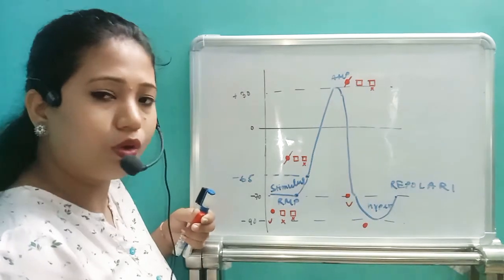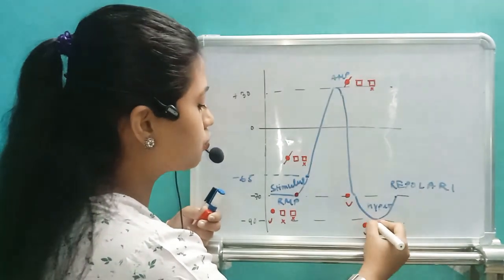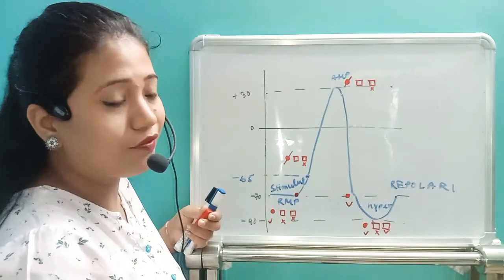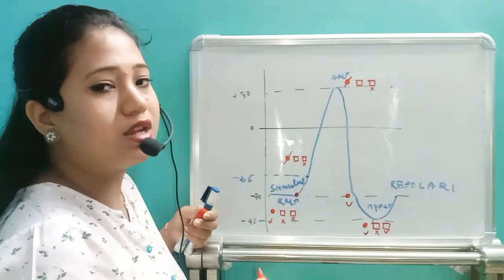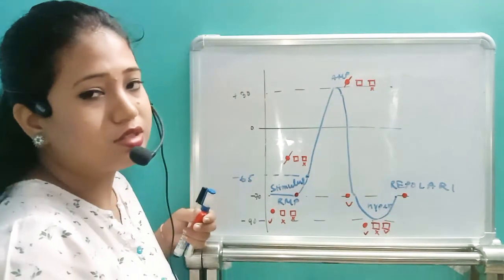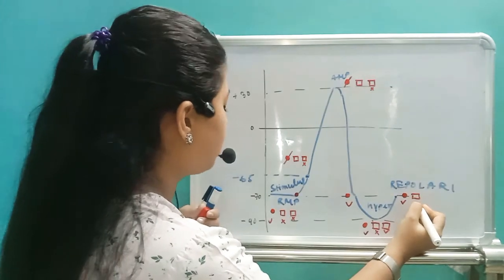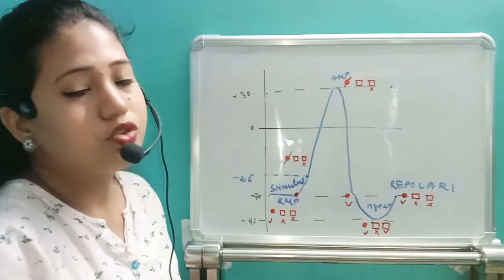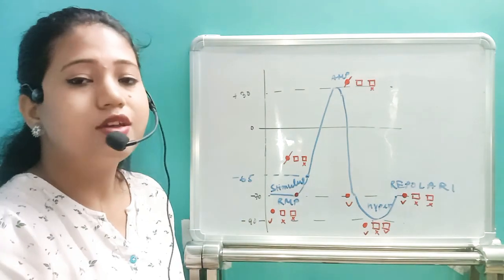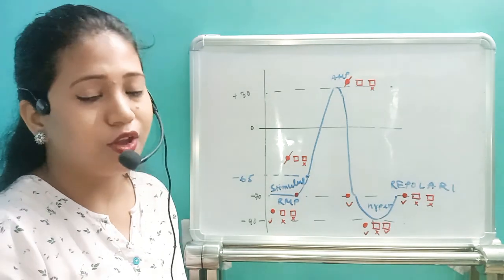When the hyperpolarization state of minus 90 millivolt is reached, it comes back to repolarization. In repolarization, the sodium-potassium pump is working, the sodium ion channel is closed, and the potassium ion channel is also closed. This is how the whole graph shows the conduction of nerve impulse. In the next video, we will see the transmission of nerve impulse. That's all for this video. I hope you understood. Thank you.